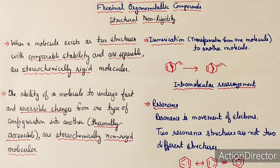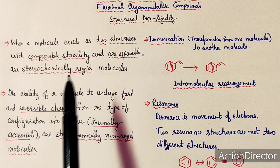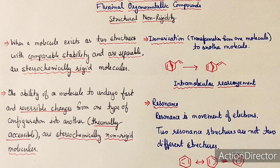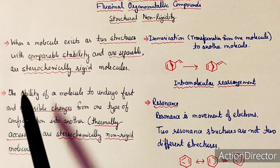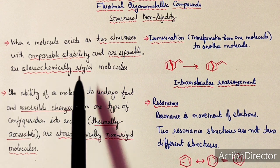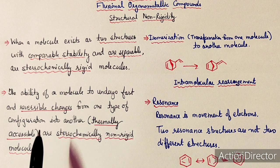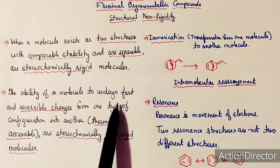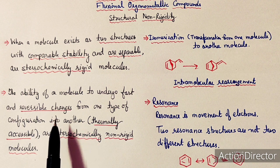Non-rigidity means flexible. When a molecule exists as two structures with comparable stability and they are separable — meaning the two compounds can be distinguished — the molecule is called a stereochemically rigid molecule. The two molecules can be separated and have their independent existence.